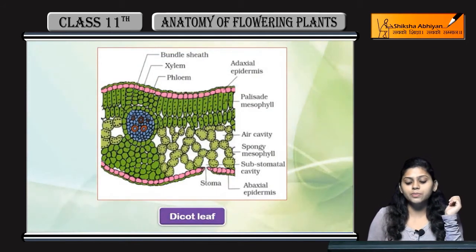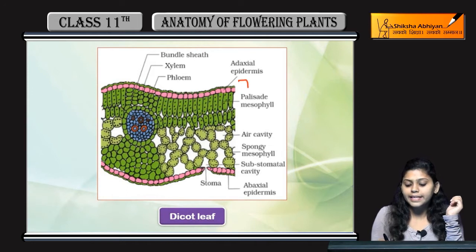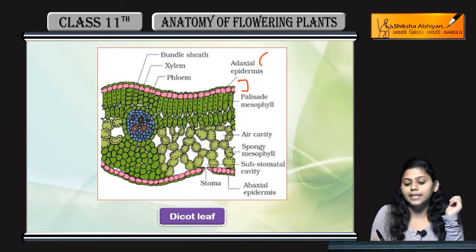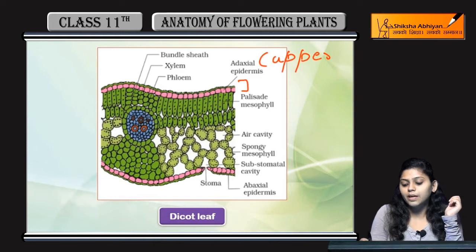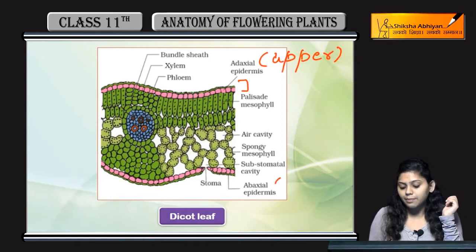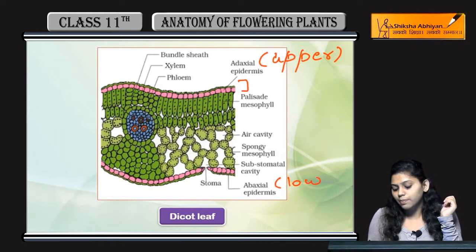Structure में देखें तो adaxial epidermis होती है। Adaxial means upper — upper part of the leaf. And abaxial is the lower part of the leaf.